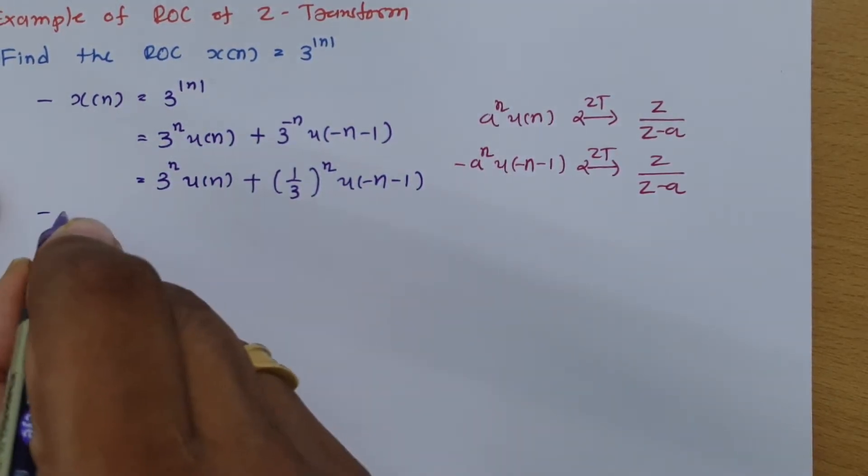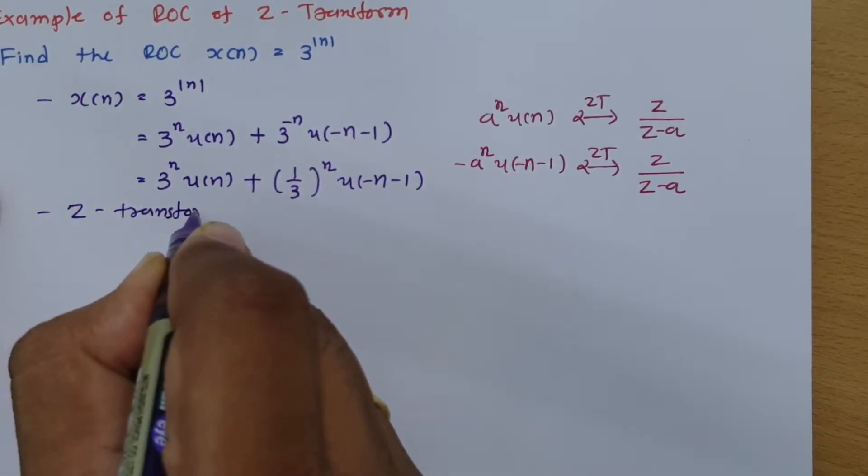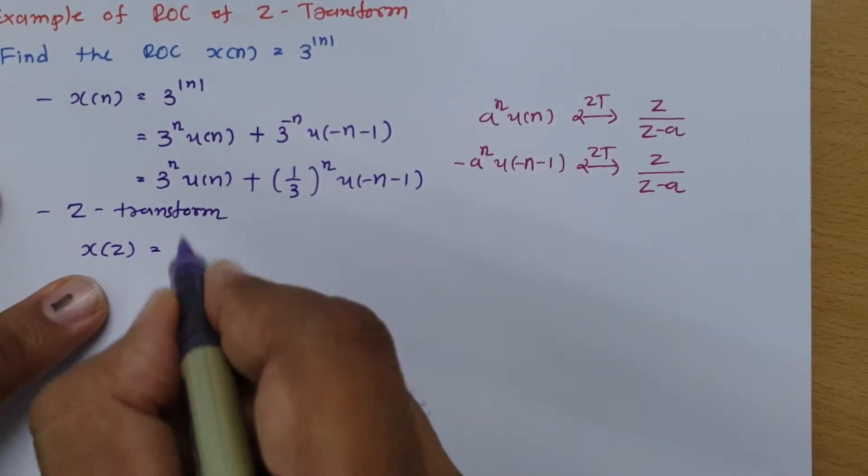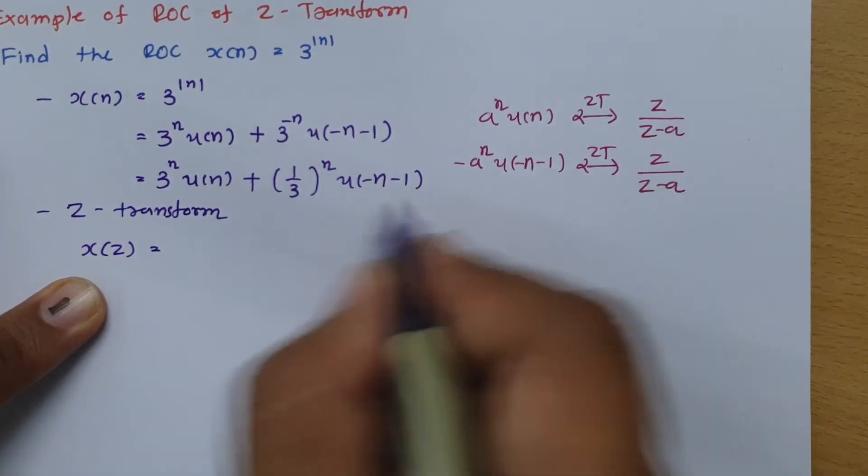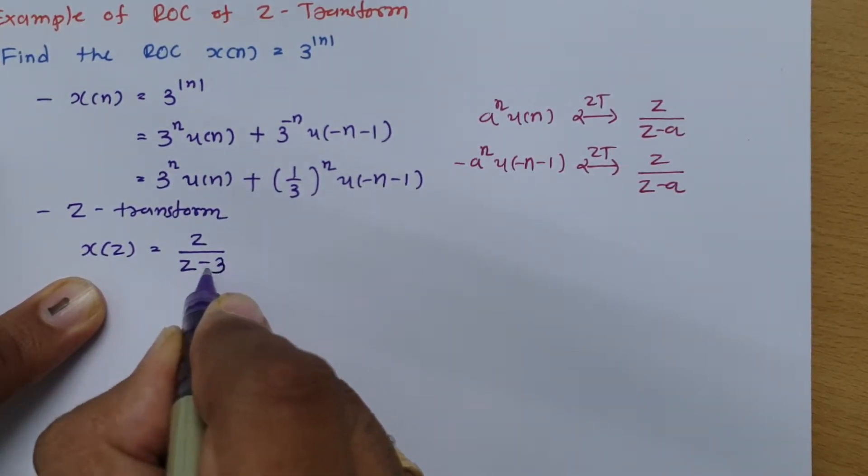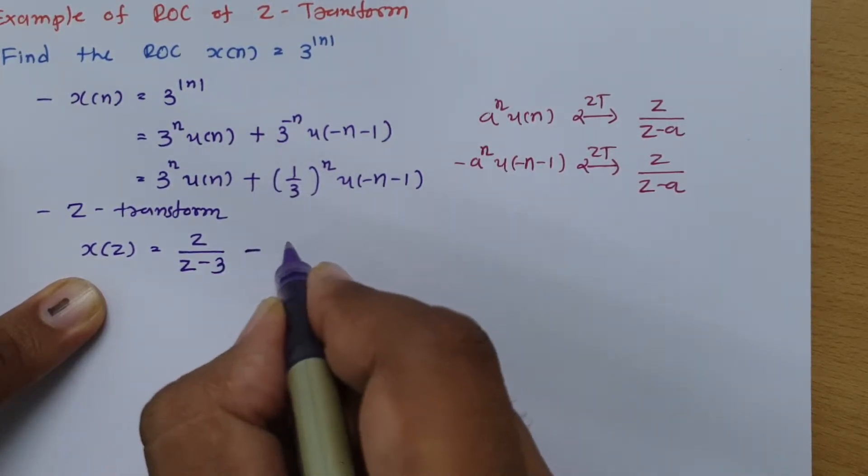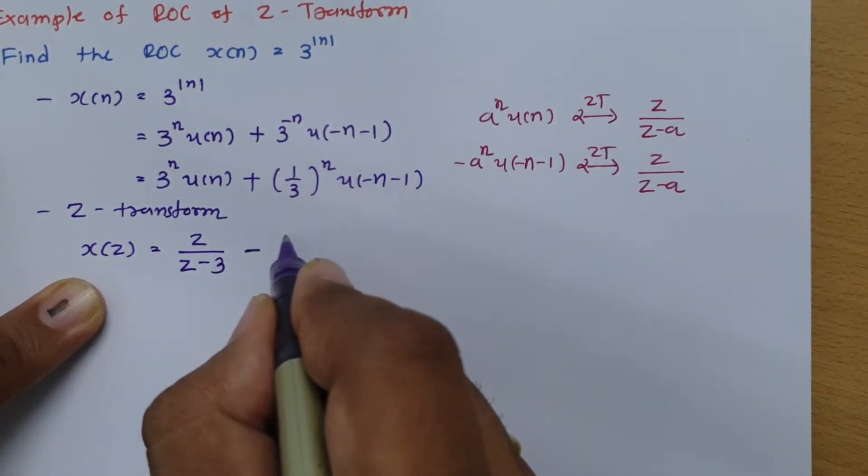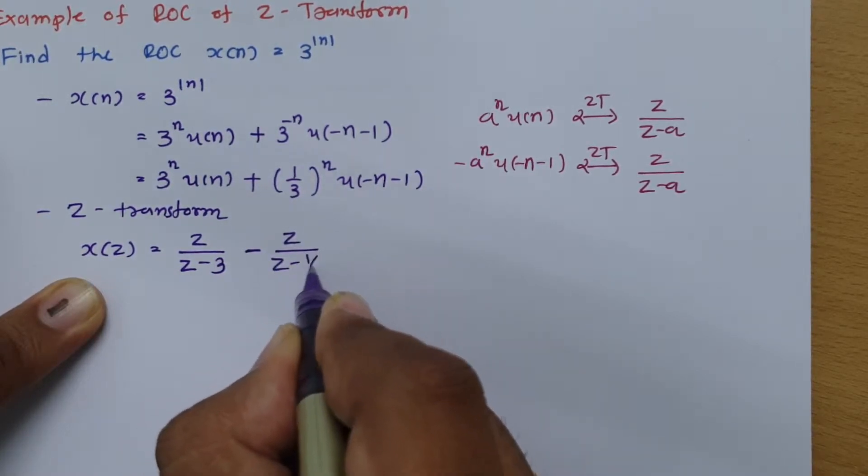So the Z-transform will be X(Z). Now for the first signal, A = 3 in this equation, so Z/(Z-3). Now the minus sign is not here, so I need to write minus, and Z/(Z-A) where A is 1/3. So I can say Z/(Z-1/3).